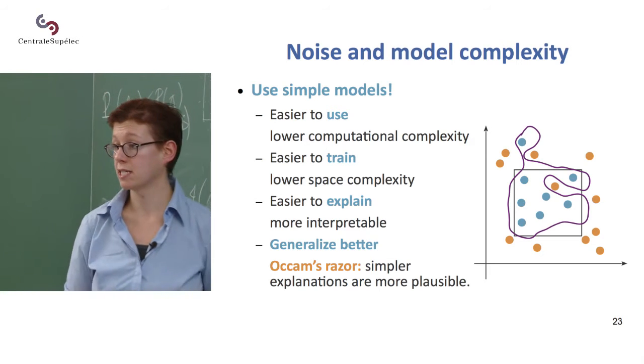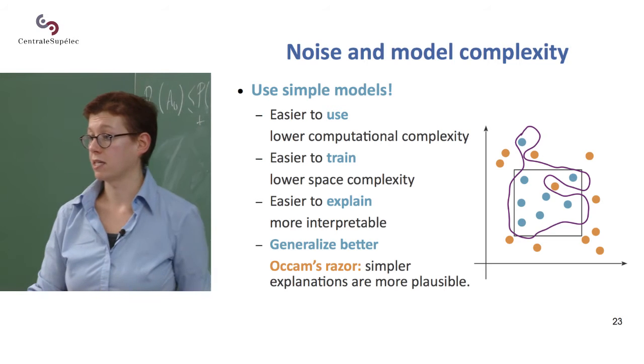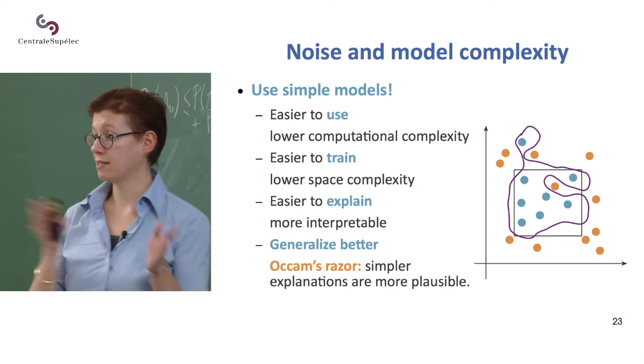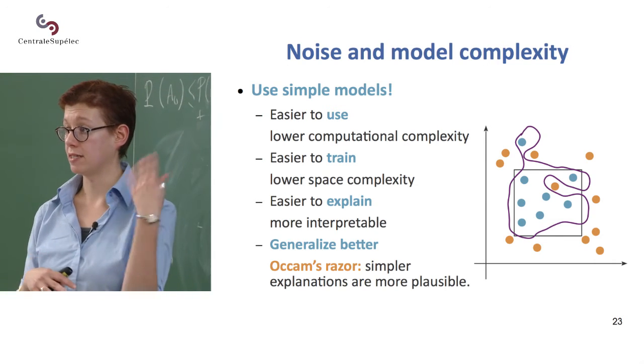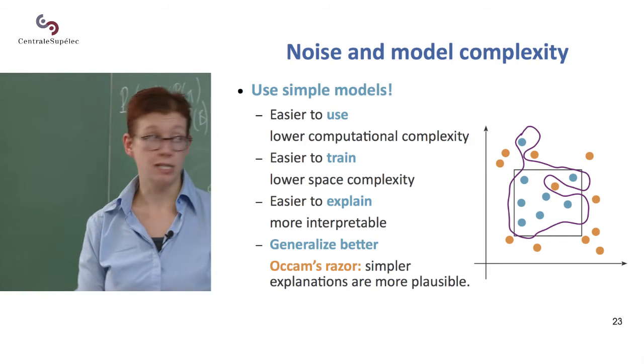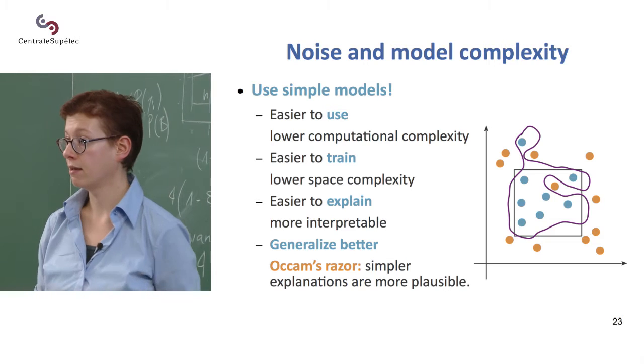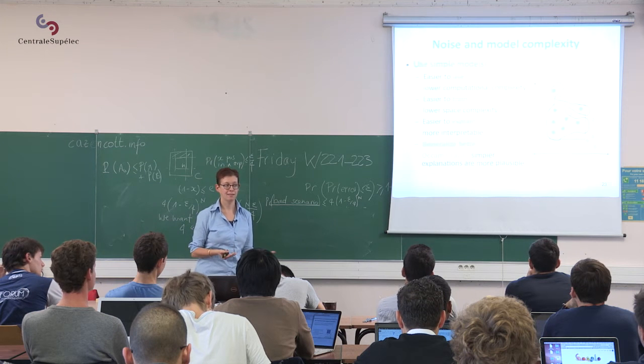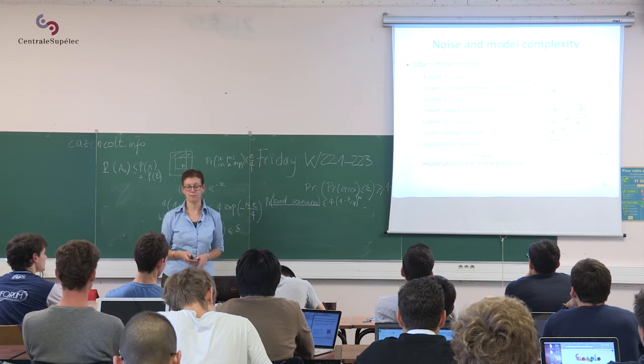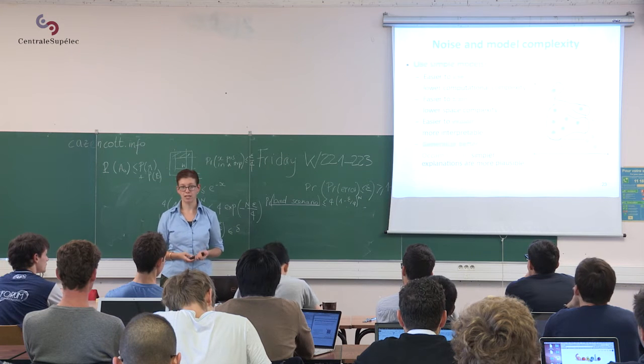And also, it's much easier to say, well, I labeled this as a family car because its price was between this and that, and its power was between this and that, than to tell someone, I labeled it because it fell within this really weirdly shaped thing. Think again of the bioinformatics examples I was mentioning earlier.